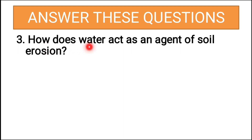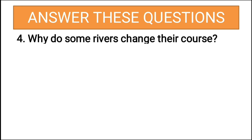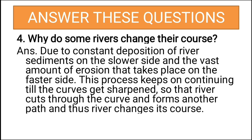Third question: how does water act as an agent of soil erosion? Heavy rains cause floods, and flooded rivers and running water remove the topsoil. Running water washes the soil off hill slopes, making the slopes unfit for cultivation. Fourth question: why do some rivers change their course? Due to constant deposition of river sediments on the slower side and the vast amount of erosion on the faster side,